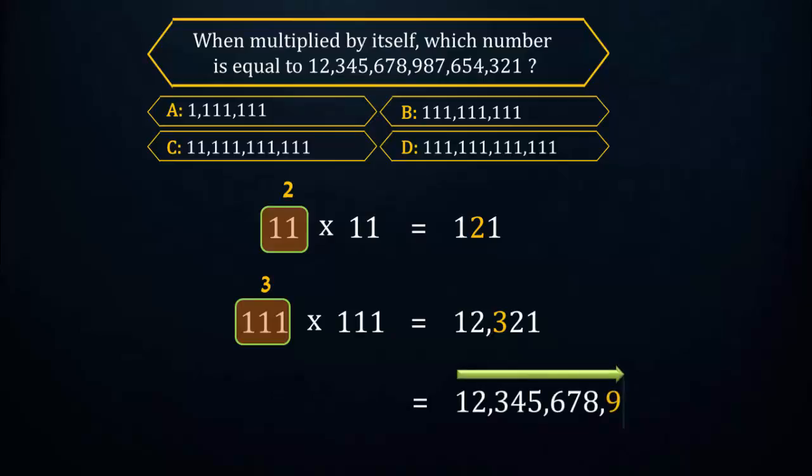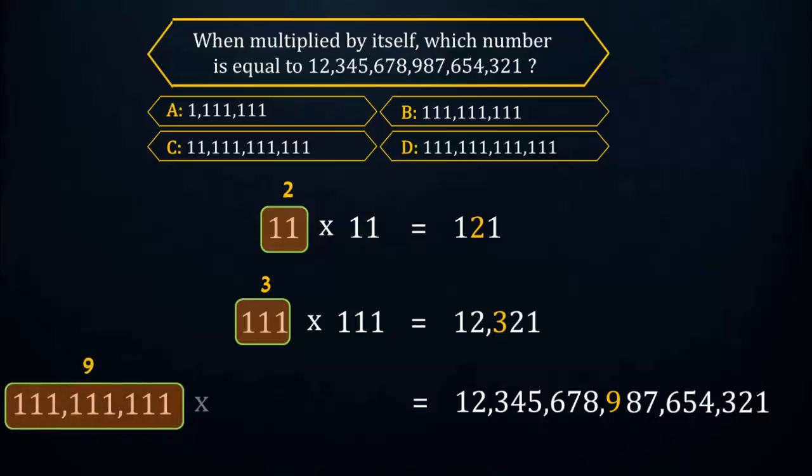So to get a result that has numerals counting up to nine, then counting in reverse back to one, we should have a number with nine ones multiplied by itself. That means B is the correct option.